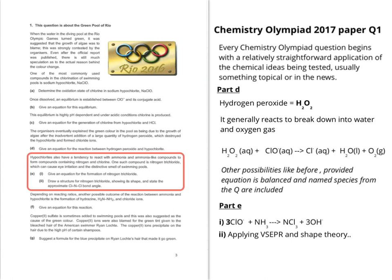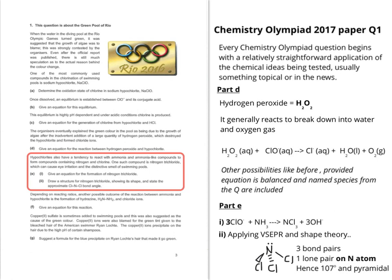Part E part ii asks you to draw a structure for nitrogen trichloride showing its shape, and state the approximate Cl-N-Cl bond angles. This is a classic application of valence shell electron pair repulsion theory from first-year chemistry, plus use of dotted lines and wedges to show the three-dimensional structure. Drawing this out is very similar to ammonia — you have one lone pair on nitrogen — giving a pyramidal shape with a bond angle of approximately 107 degrees.